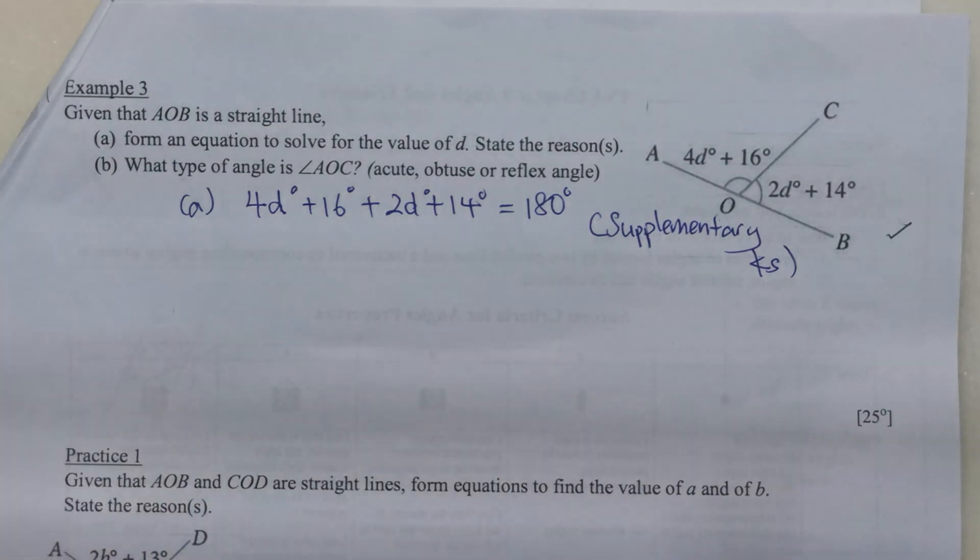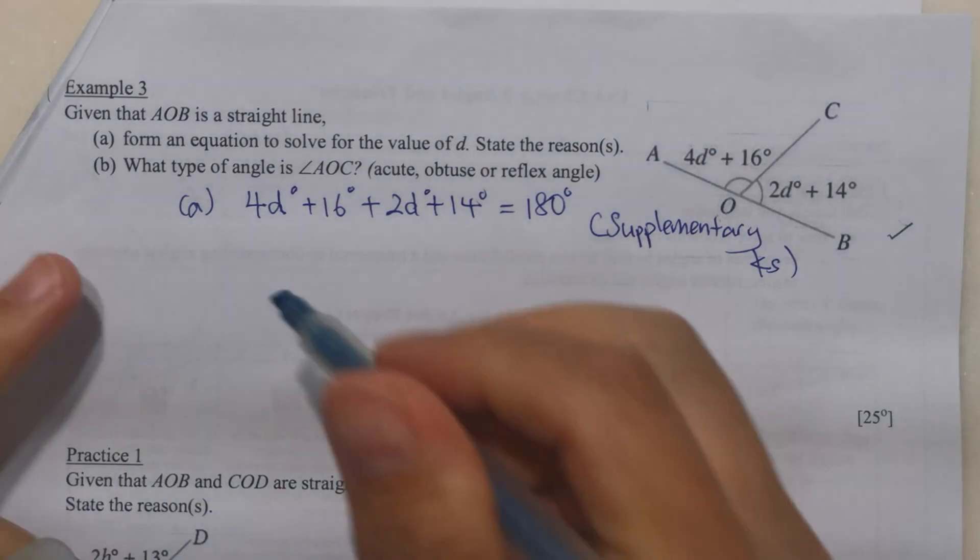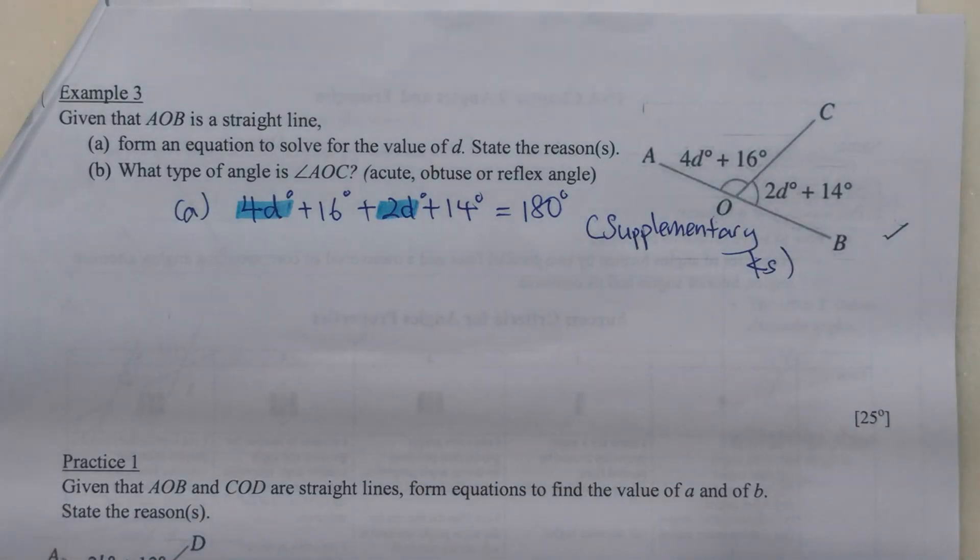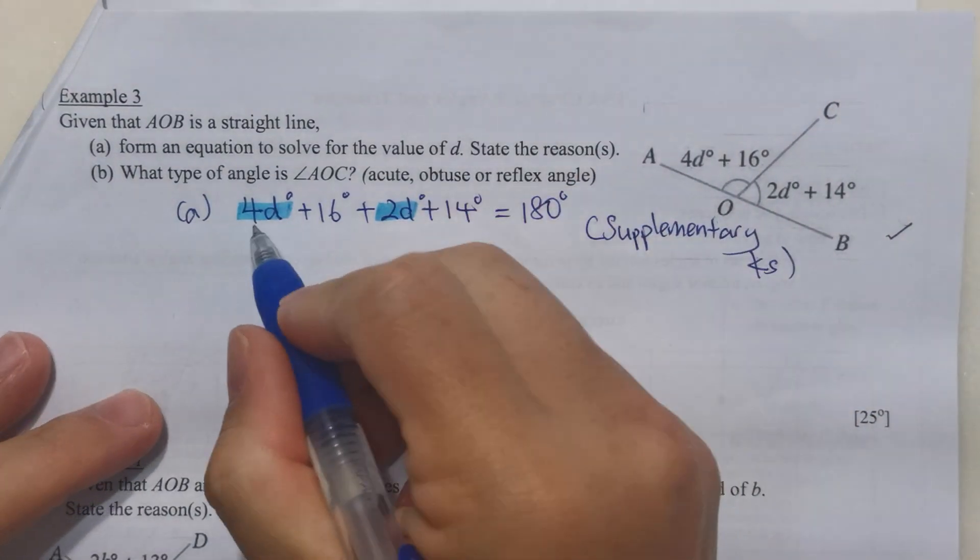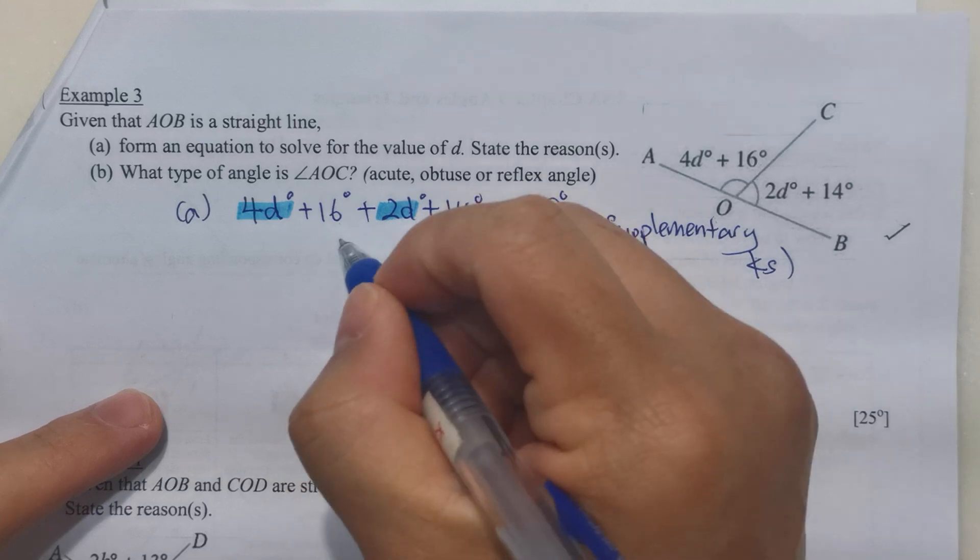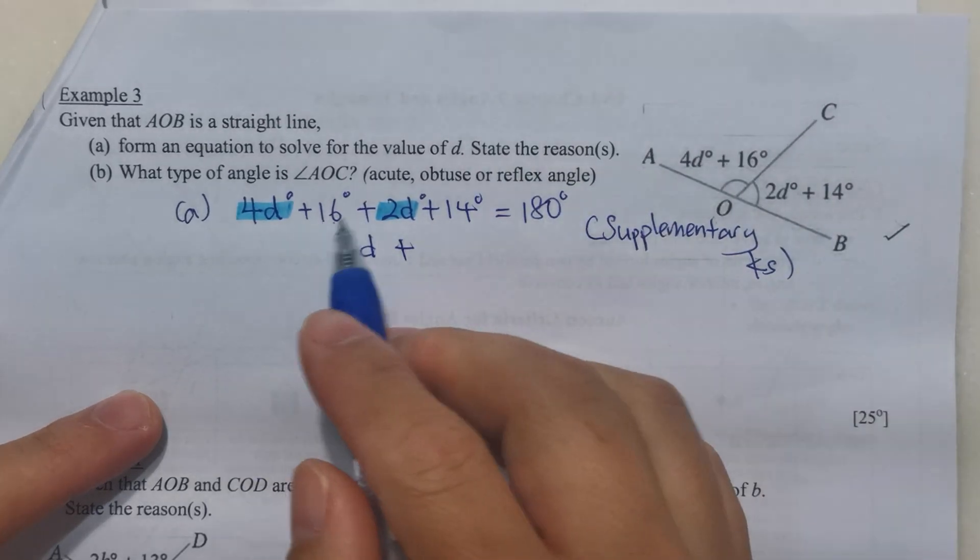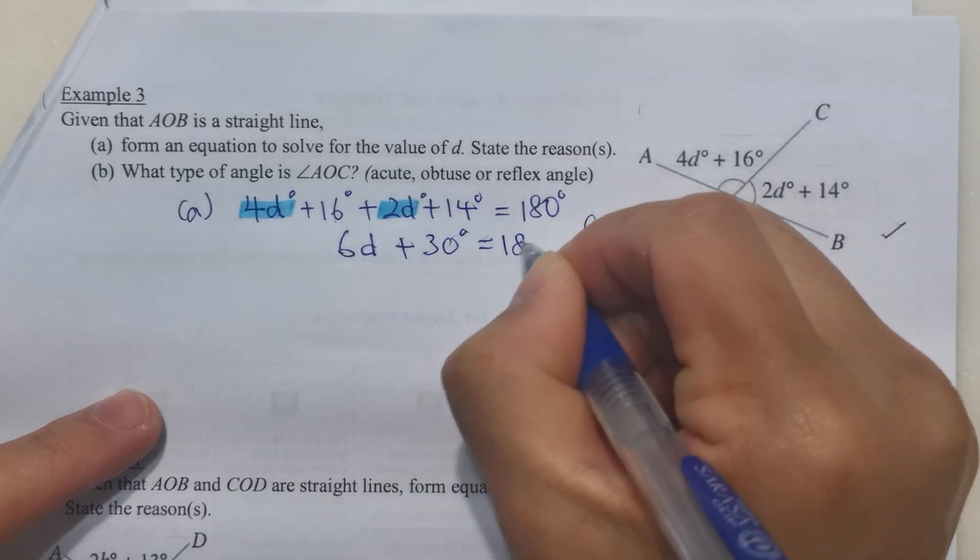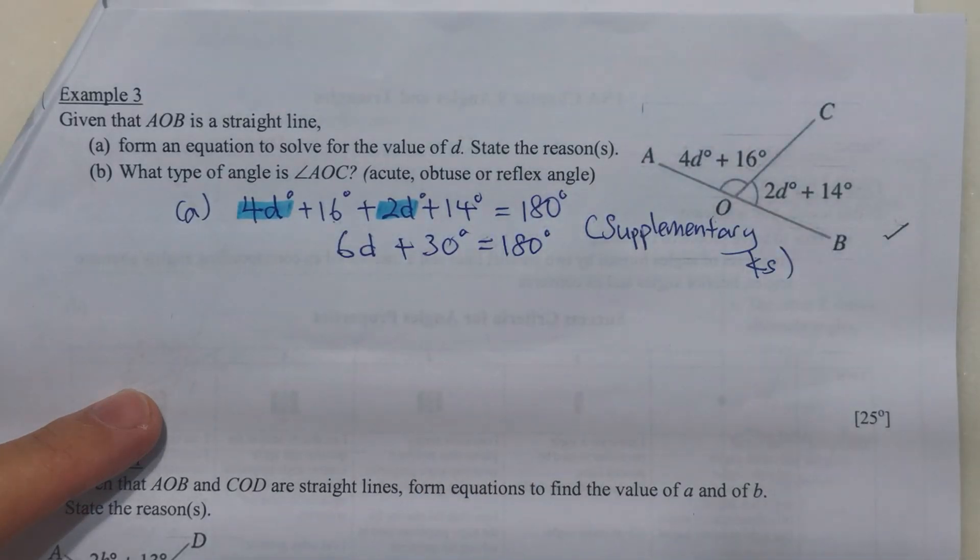Now we're going to simplify from the equation. You can see that we have like terms, so we're going to put them together. 4D plus 2D will give us 6D. The numbers we just add them together, 16 plus 14 equals 30, equal to 180 degrees.